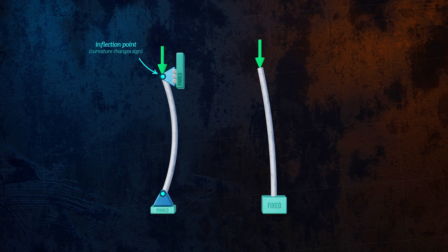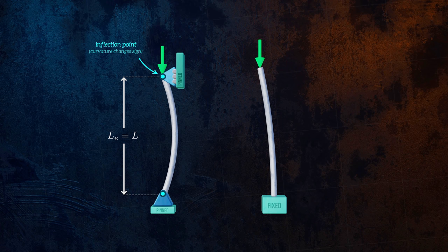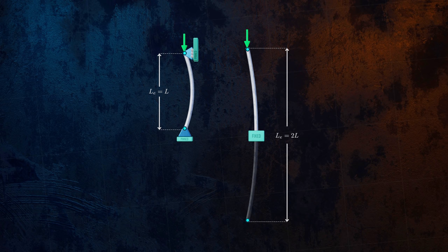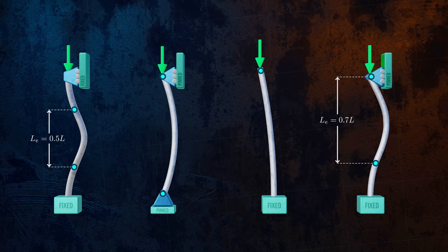The column that's pinned at both ends has an effective length equal to the column length, but for a column that's free at the top and fully fixed at the bottom, the distance between inflection points is twice the column length. Here are a few other common end conditions and the associated effective lengths.